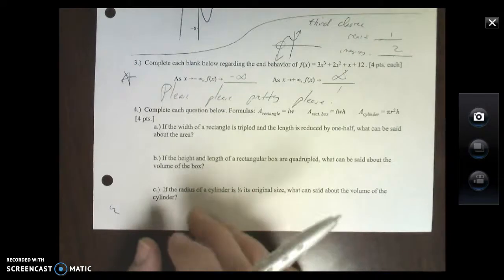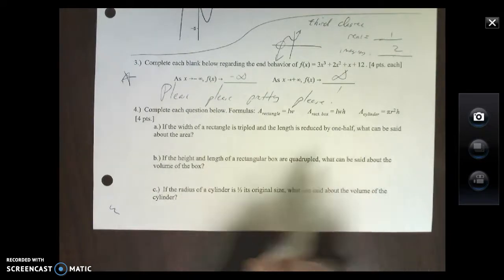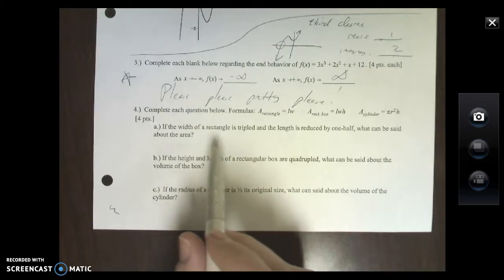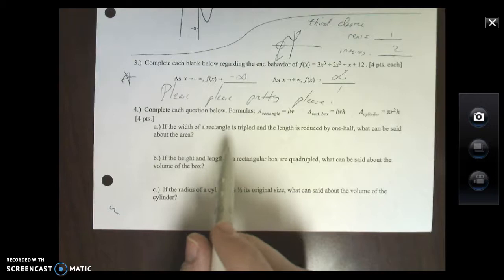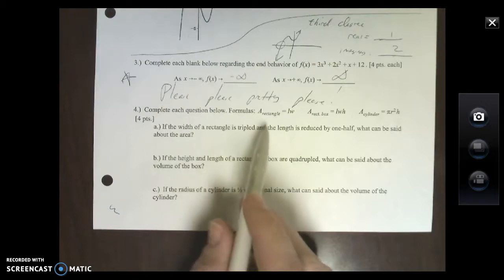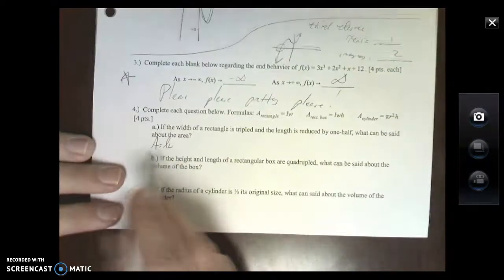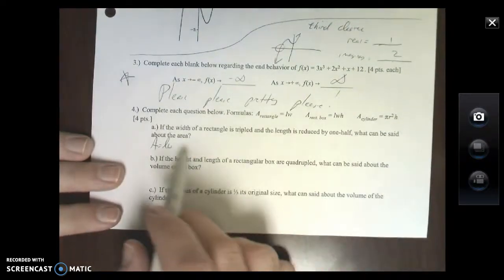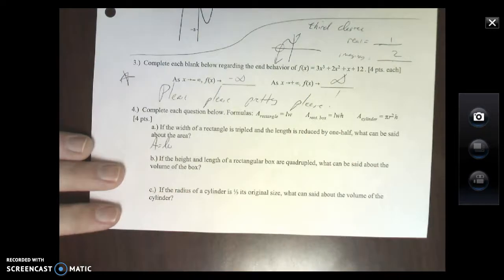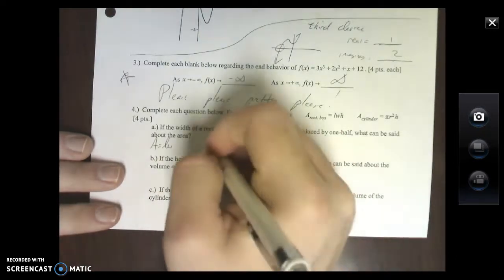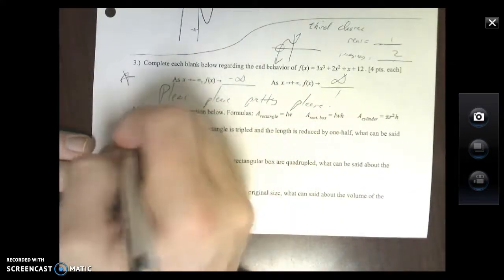Number four: complete these questions below. Here are some formulas that are going to help us out. If the width of a rectangle is tripled and the length is reduced by one half, what can be said about the area? We're talking about a rectangle area, so right here normally it's just length times the width. So this is our normal. It says what if the width is tripled, so I'm going to make my width 3W.